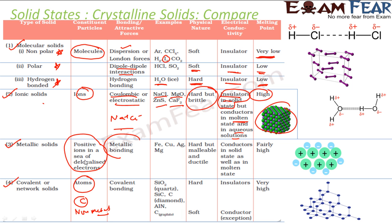Metallic solids — their constituent particles, as I told you, are metal positive ions with a sea of free electrons, and they have metallic bonding which is also strong. We are talking about full charge there. Examples are iron, copper, and silver. They are also hard but they are malleable and ductile — why? Because of the free electrons. They are conductors in any state because they have free electrons. Their melting point is very high because the force of attraction is pretty strong.